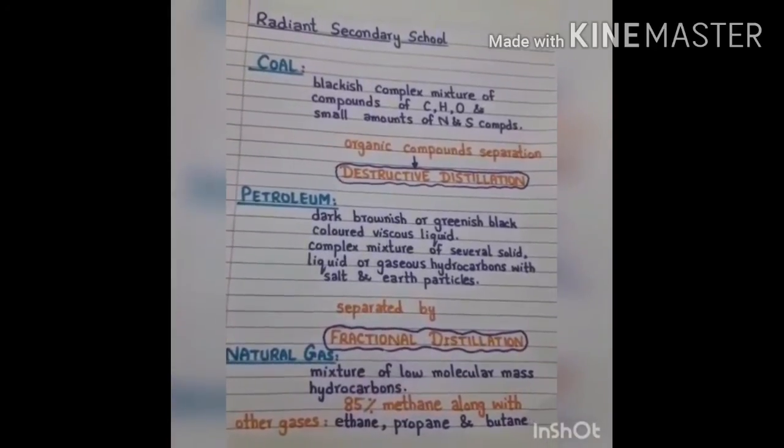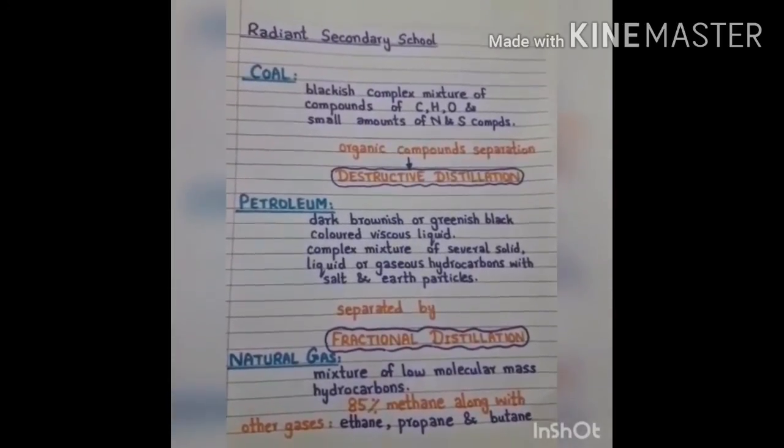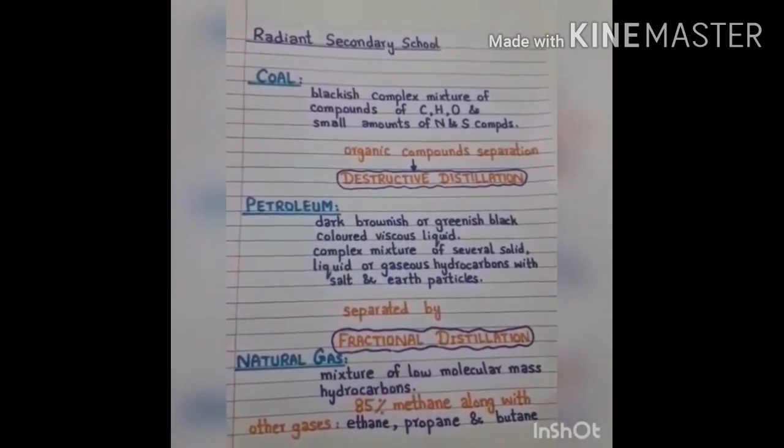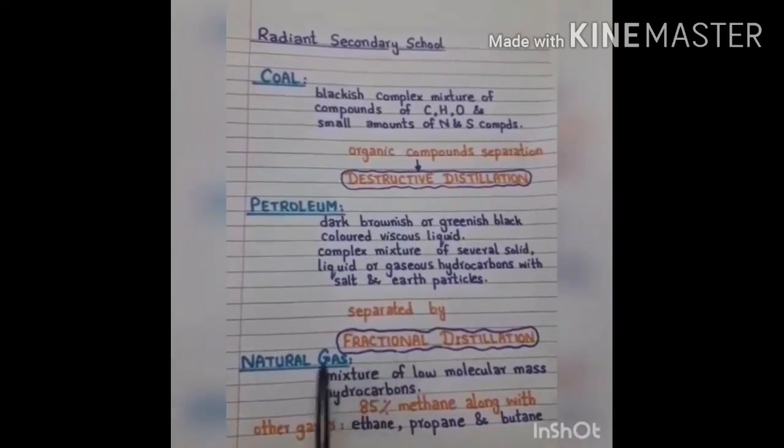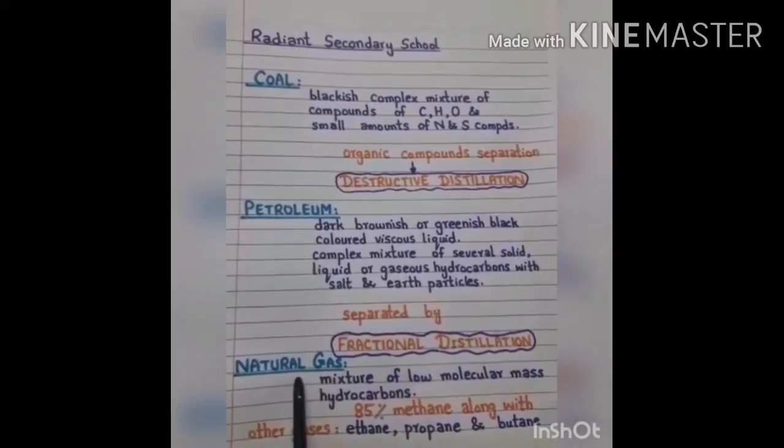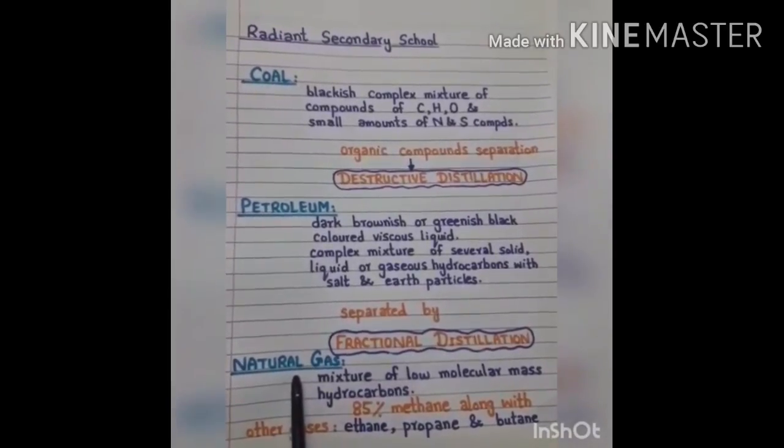Natural gas is used as a fuel in homes and industries. It is also used in automobiles as compressed natural gas, which is known as CNG. And natural gas is also used for the manufacture of carbon black and fertilizers. That's it.